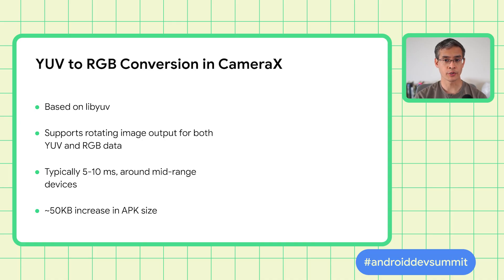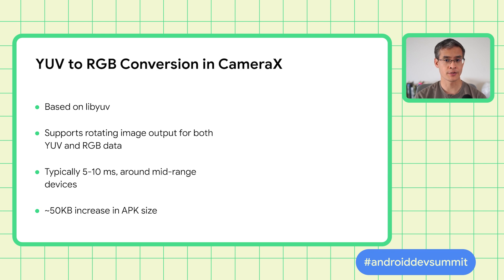YUV to RGB conversion in CameraX is based on libYUV. Additionally, in 1.1, the data itself can be rotated to a target resolution. Conversion typically takes about 5 to 10 milliseconds on mid-range devices on image sizes of 640x480 to 1080p. Of course, performance varies by device. Additionally, there is a small increase in APK size of about 50 kilobytes.